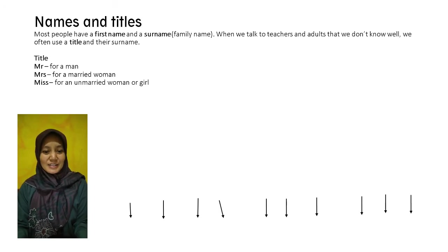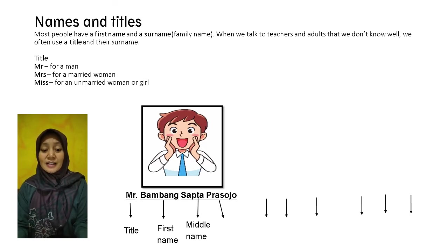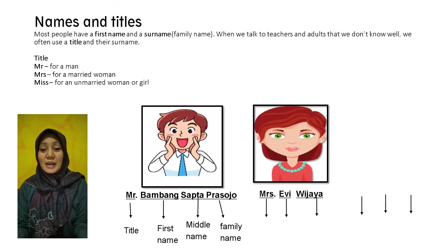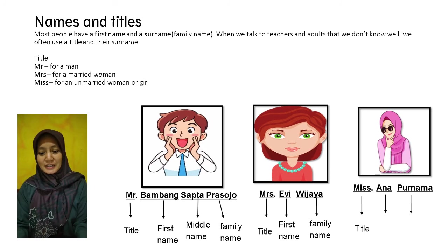Let's see the examples. Mr. Bambang Sabto Prasojo — Mr. is the title, Bambang is the first name, and Prasojo is the family name. Mrs. Evie Vijaya — Mrs. is the title, Evie is the first name, and Vijaya is the family name. Miss Anna Purnama — Miss is the title, Anna is the first name, and Purnama is the family name.